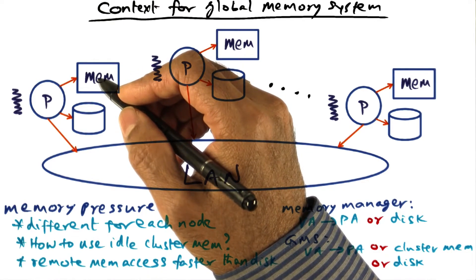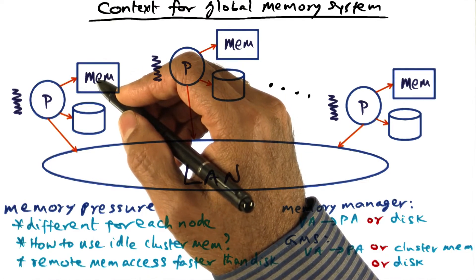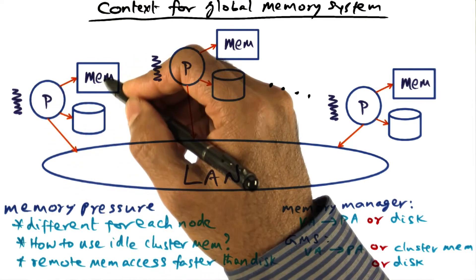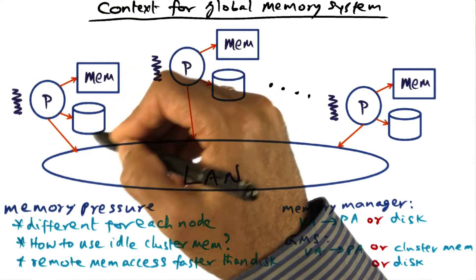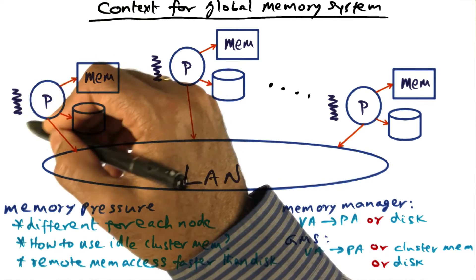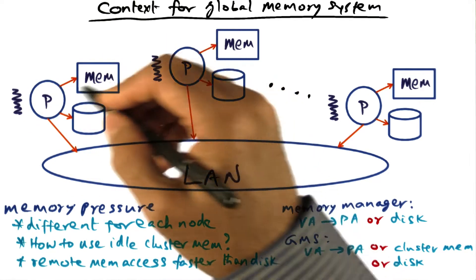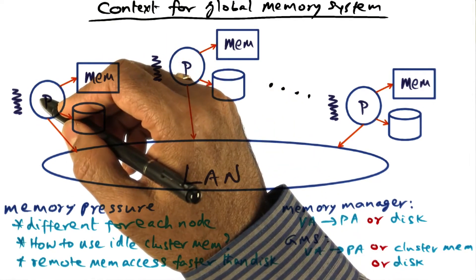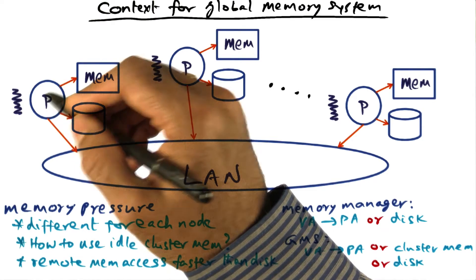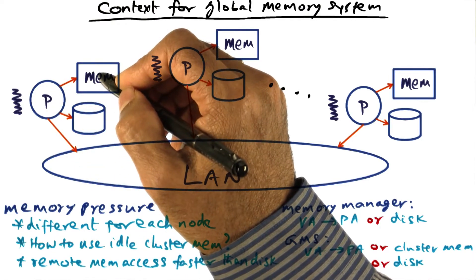The virtual memory manager supports this by paging in and out from the disk the pages that are being accessed by a process at any particular point in time, so that the process is satisfied in terms of having its working set contained in the physical memory.